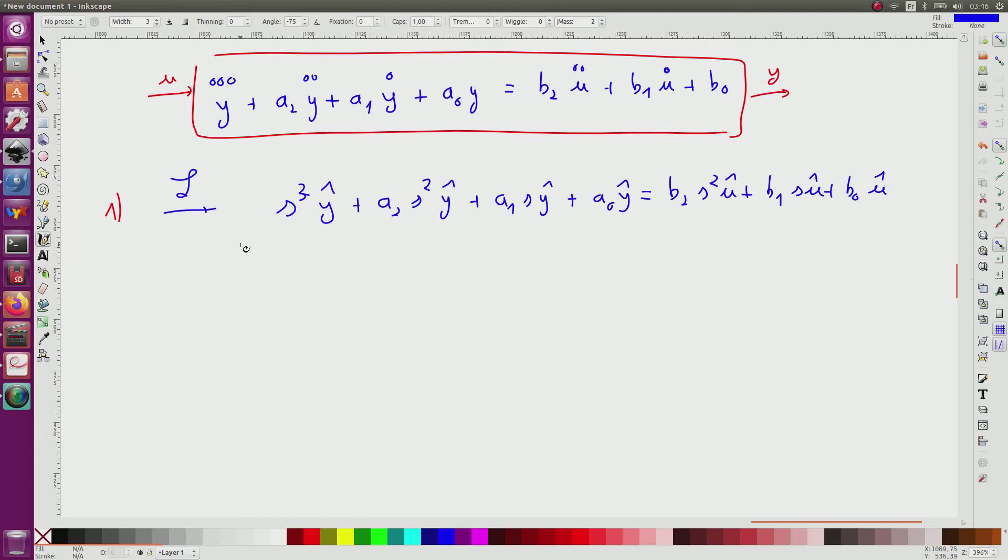I factorize and isolate y-hat and I get that y-hat equals something multiplied by u-hat. So it is a rational function where here I have b2 s² plus b1 s plus b0 and here this polynomial. And this corresponds to the transfer function g of s.